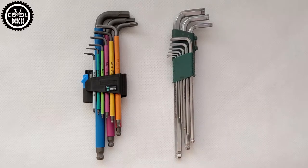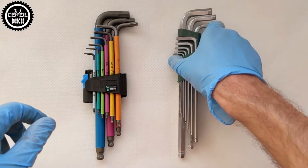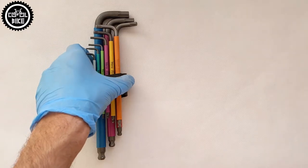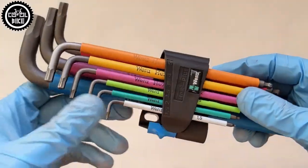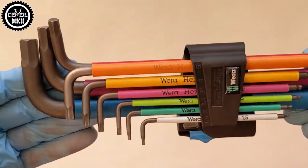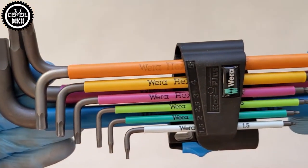Hello! I invite you to compare the Jonsway and VERA hex key sets. Both kits are configured the same. They consist of 9 keys from 1.5mm to 10mm, which are ended with balls that allow work at an angle.